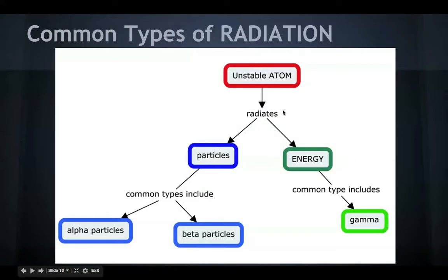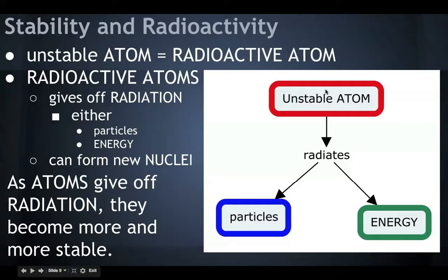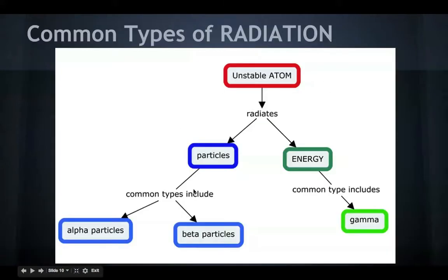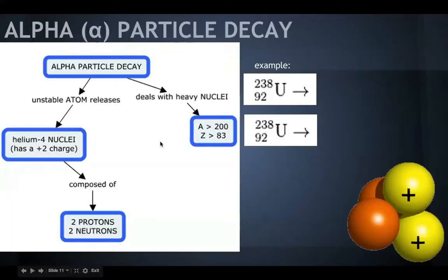Alright, so what I did is I took this, the flow chart from the previous slide, this right here, and kind of just added to it down here. So particles, there's common types of particles, include alpha particles and beta particles. And the common type of energy that's released from atoms is gamma. So now what we're going to do is we're going to go over each one of these on an individual slide.